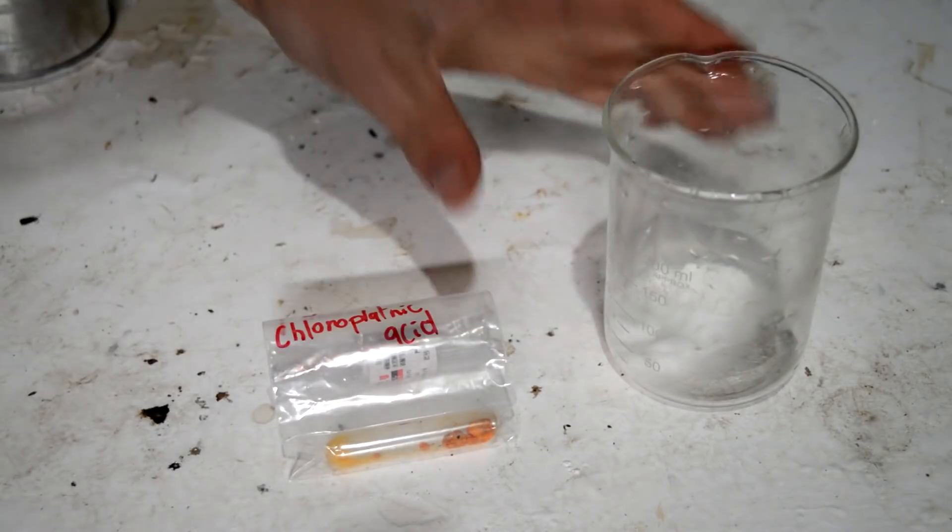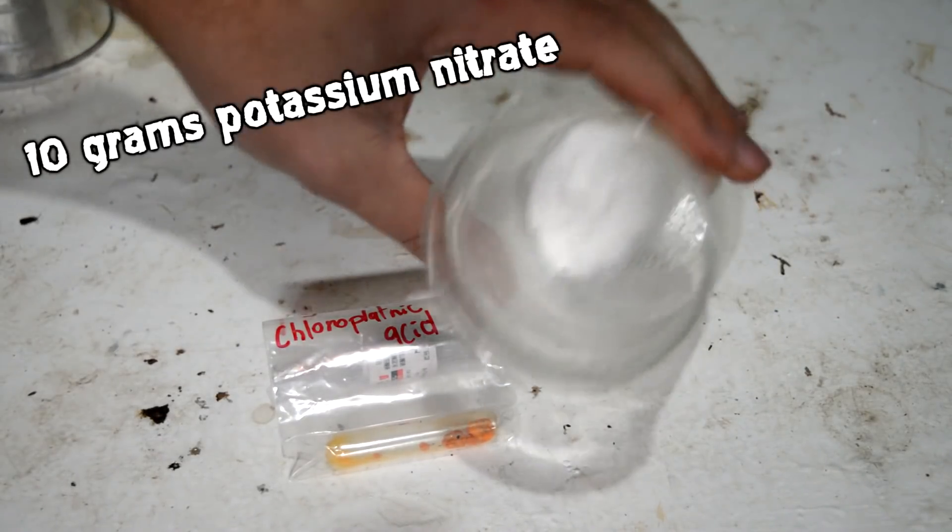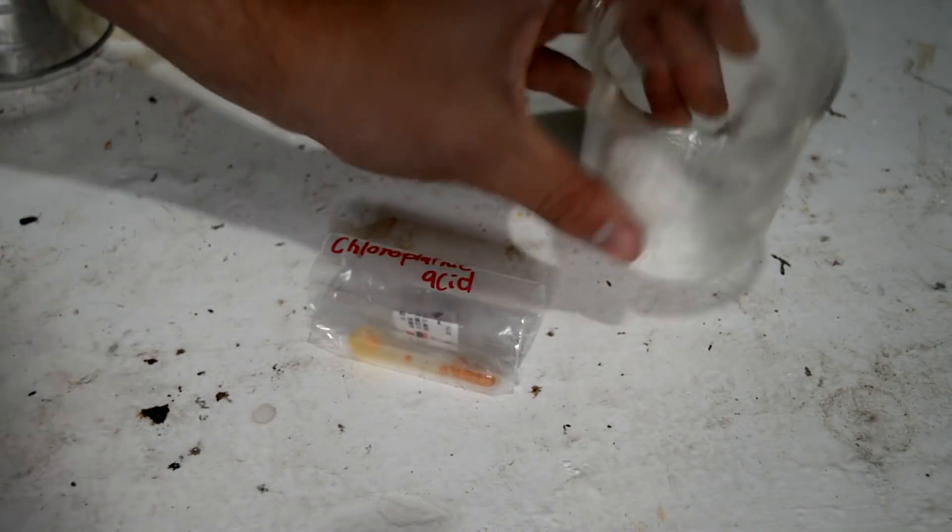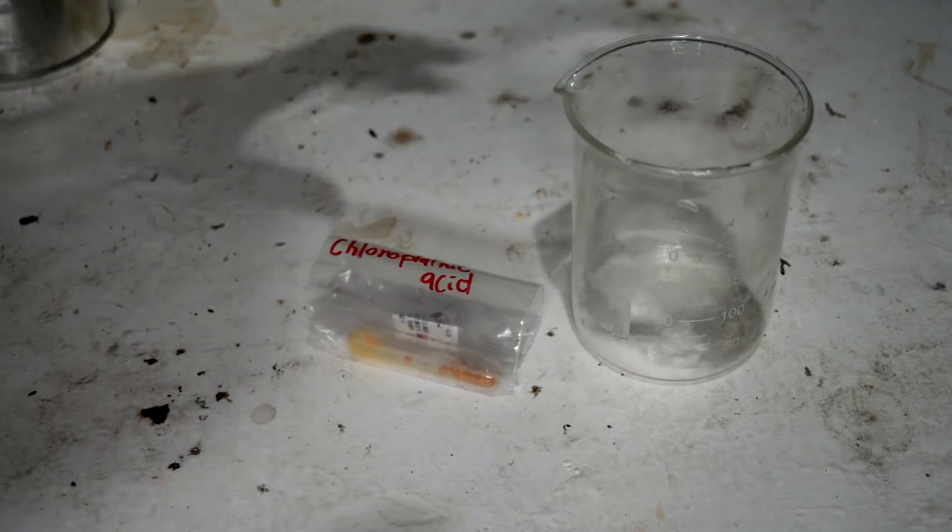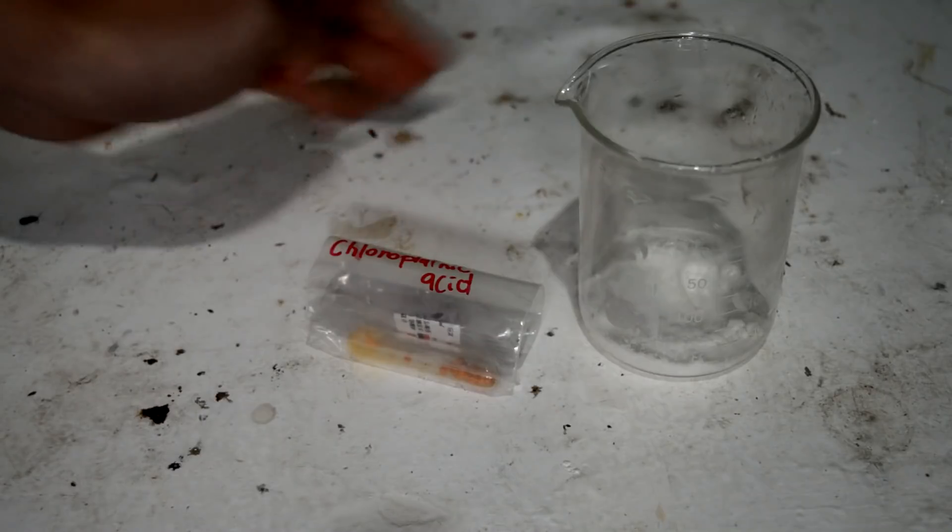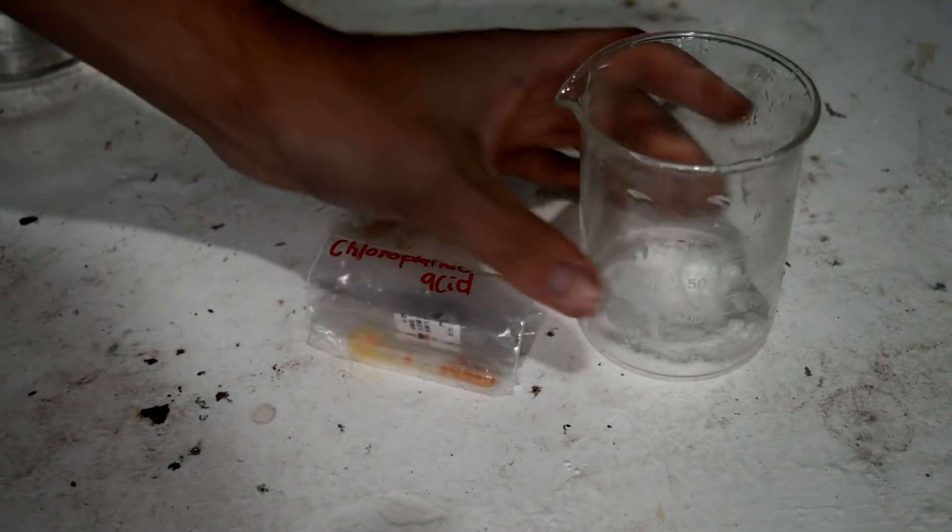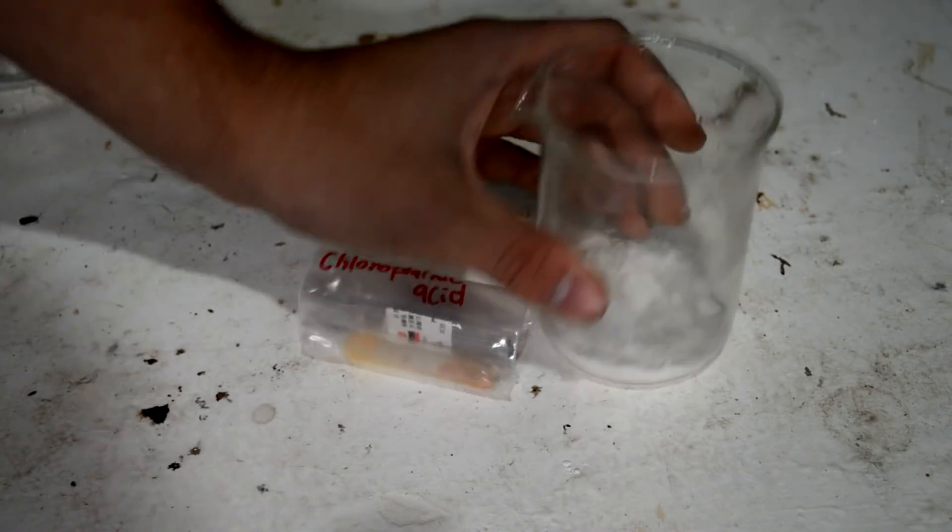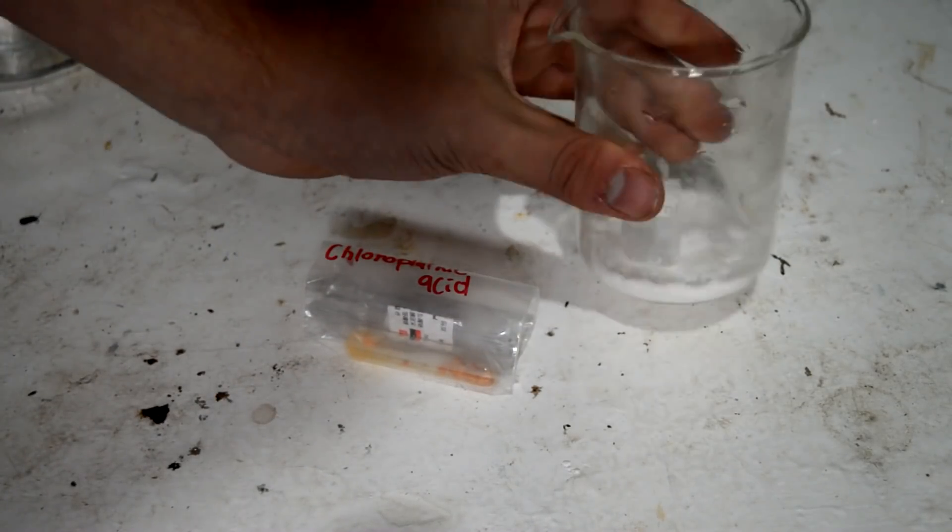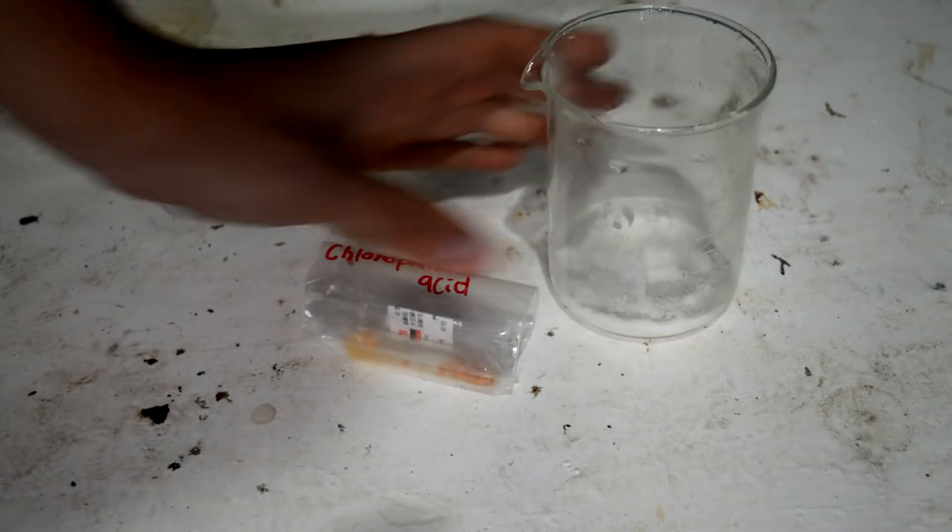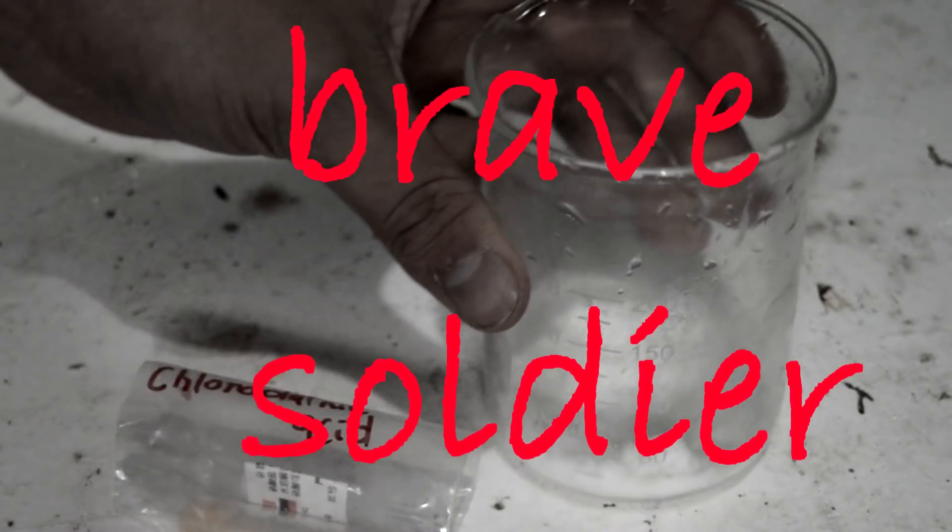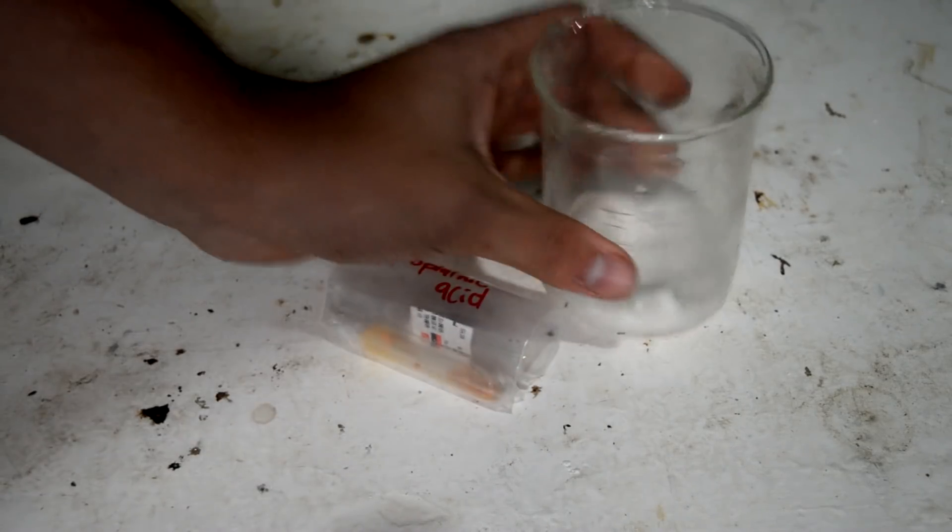So our reactant for this is pretty basic. Here we have 10 grams of potassium nitrate and we're just going to put our one gram of chloroplatinic acid with the 10 grams of potassium nitrate and heat the ever living shit out of it until we get our nice platinum oxide. Sounds easy, but it might practically be hard because the temperatures are quite high.